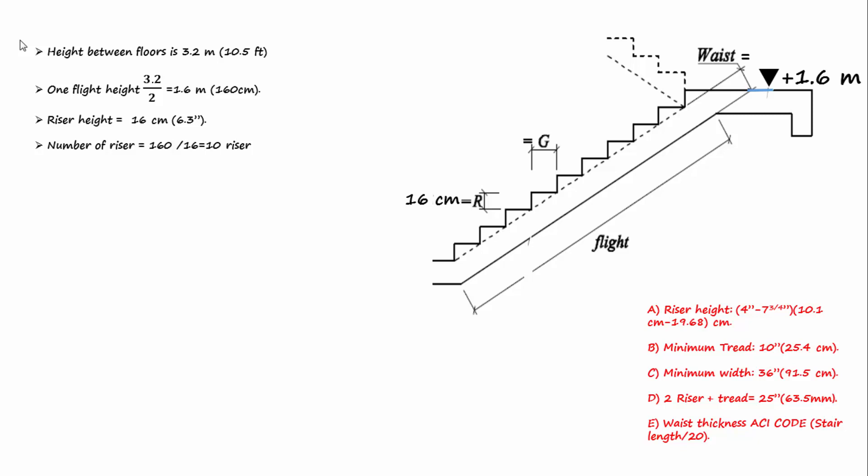The equation 2 × riser + tread = 25 inch or 63.5 cm will be used here to find the tread length. So the tread length will equal 31.5 cm or 12.4 inch. This value is not less than 10 inch, so the tread length is acceptable.